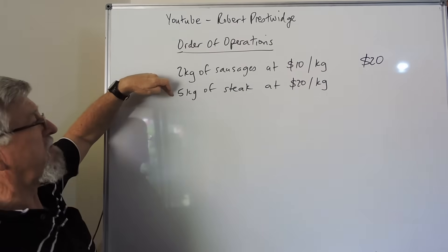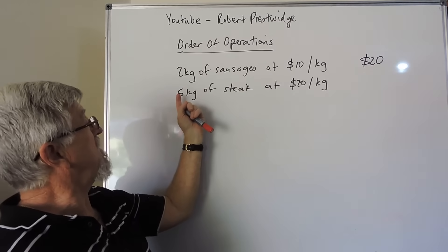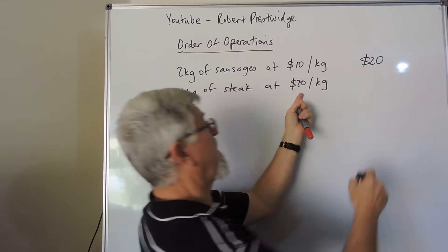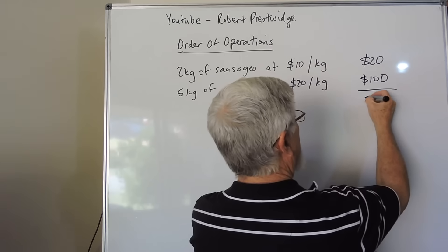If you wanted 5 kilograms of steak at $20, most of you would look at that and be okay that's 5 lots of 20. You could pick up your calculator. 5 lots of 20 is $100. So you know that your bill when you add those two up is going to be $120.